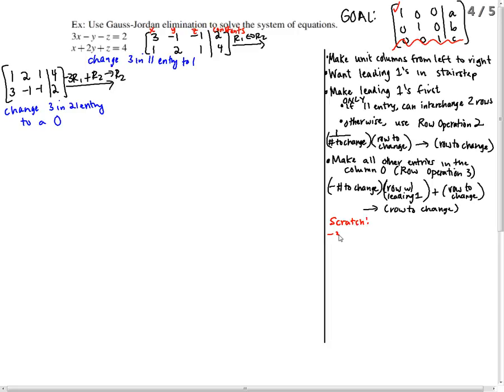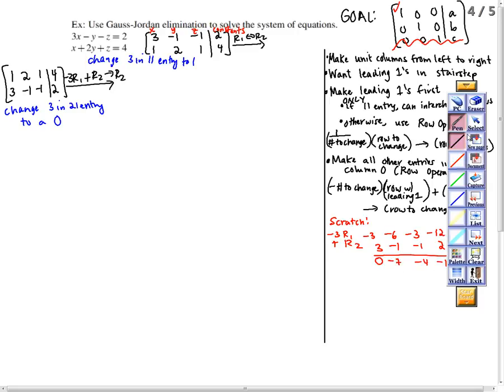Here's the scratch work. So we have negative 3 times row 1. That's negative 3, negative 6, negative 3, negative 12. I add that to row 2, 3, negative 1, negative 1, and 2. I get 0, negative 7, negative 4, and negative 10. That is my new row 2.